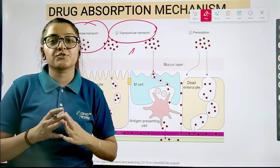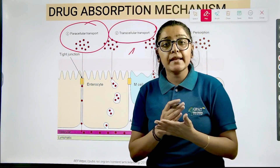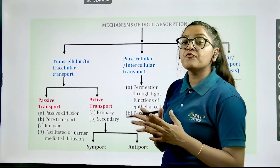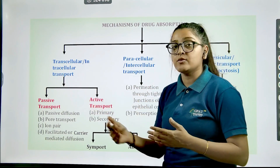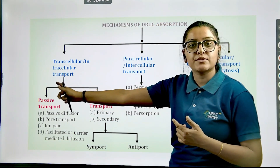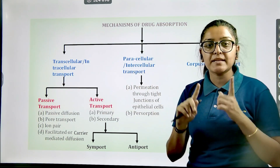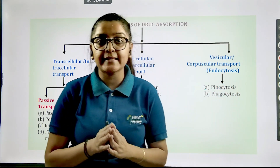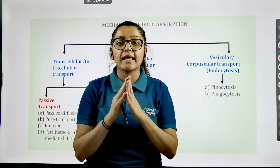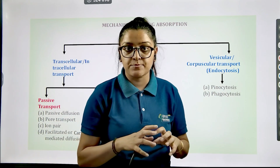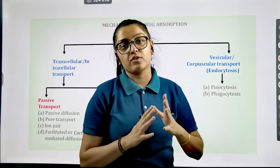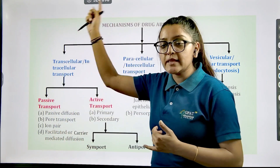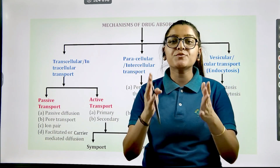These temporary openings facilitate the entry of the drug through the cell membrane. Categorizing them: transcellular (also referred to as intracellular transport) is across the cell; paracellular is between tight junctions via permeation or persorption; and vesicular transport works like an amoeba engulfing material — using phagocytosis (cell eating) and pinocytosis (cell drinking). All these absorption mechanisms will be covered one by one in the upcoming videos, so stay tuned.